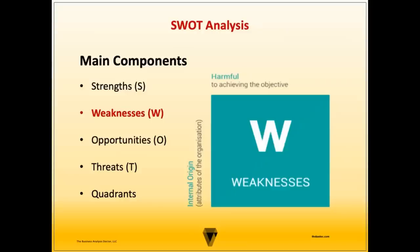Weaknesses are the internal factors or activities that the organization does poorly or not at all. These may include legacy processes, outdated systems, unreliable or unskilled employees, poor customer service, or any factor that impedes the future growth and development of the organization.